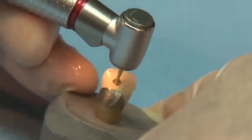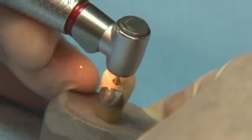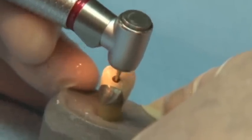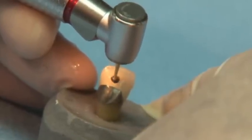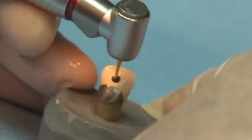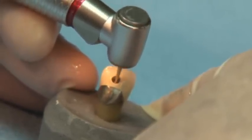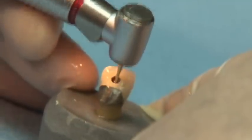S.S. White offers a selection of surgical length Great White Burrs. These burrs are available in round numbers 2, 4 and 6 as well as the ever popular number 557. The added length improves visibility and allows for deeper access.